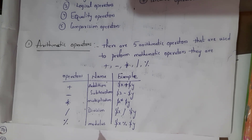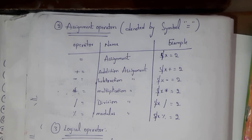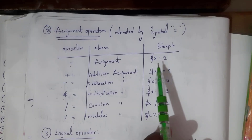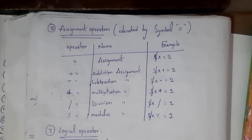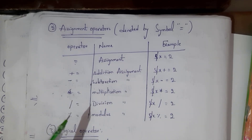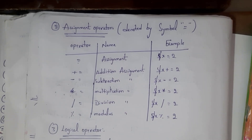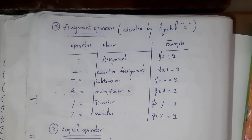The second one is the assignment operator, denoted by the equals symbol. First, '=' means assignment — for example, $x = 2. Similarly, '+=' means addition assignment, '-=' means subtraction assignment, '*=' is multiplication assignment, '/=' is division assignment, and '%=' is modulus assignment.